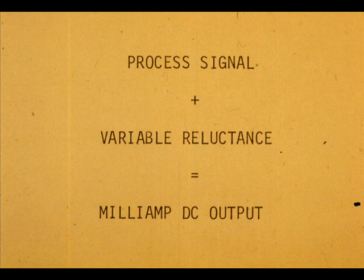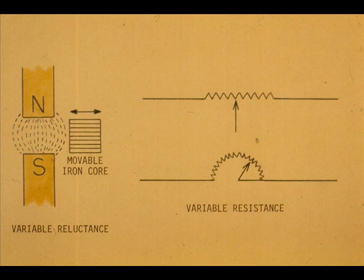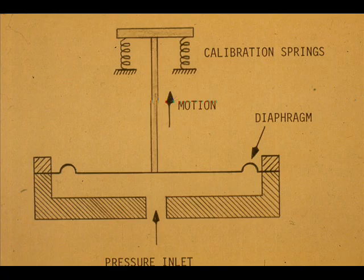The motion and force balance types to be studied rely on the principle of variable reluctance to convert process signals to milliamp DC signals. Variable reluctance in a magnetic circuit is comparable to variable resistance in an electrical circuit. In the motion balance type transmitter, the process pressure or differential pressure is opposed by a calibrated spring.